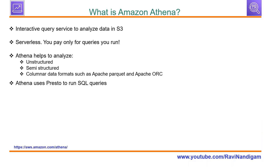Amazon Athena is an interactive query service to analyze data in S3. It is a serverless offering, and you pay only for queries you run. Athena helps us analyze unstructured data, semi-structured data, and data in columnar formats such as Apache Parquet and Apache ORC as well.